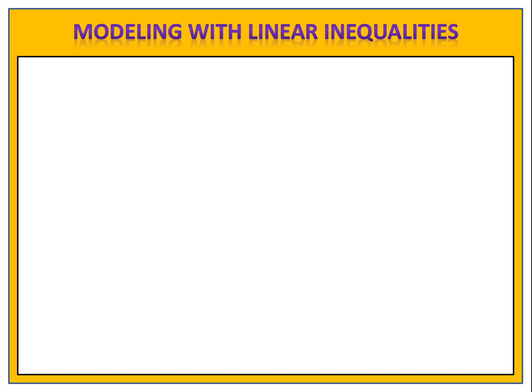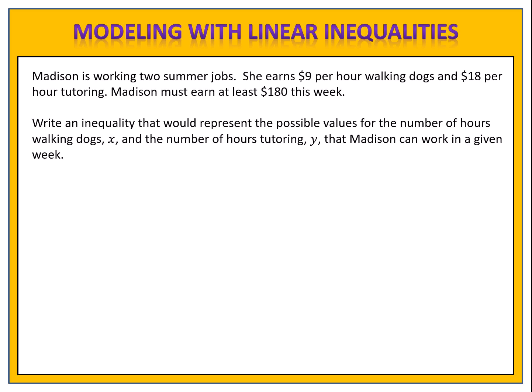The last exercise is for you to try. Madison is working two summer jobs. She earns $9 per hour walking dogs and $18 per hour tutoring. Madison must earn at least $180 this week. Write an inequality that would represent the possible values for the number of hours walking dogs, X, and the number of hours tutoring, Y, that Madison can work in a given week. Remember, begin by identifying and defining your X and Y variables clearly, then understand the scenario and write your inequality. Please pause the video here.